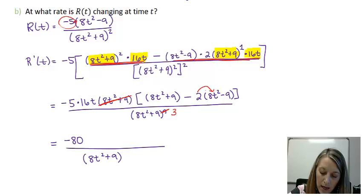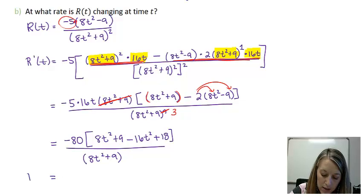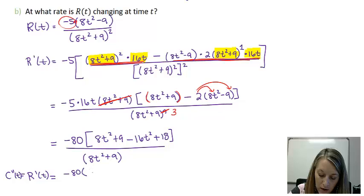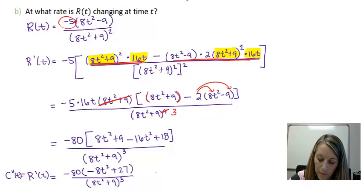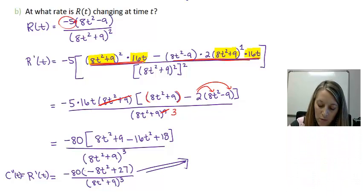And in the numerator, I just need to distribute my negative 2 through here and drop this set of parentheses. So this gives me 8t squared plus 9 minus 16t squared plus 18. And so we get our second derivative or the derivative of our rate function is equal to negative 80 times negative 8t squared plus 27 over this 8t squared plus 9 to the third power.